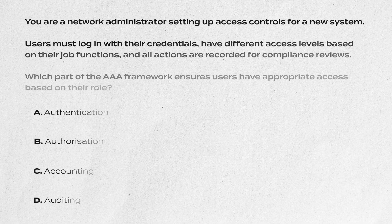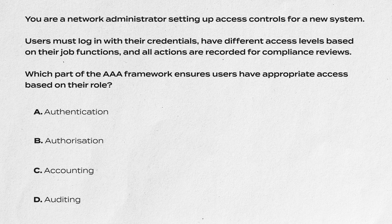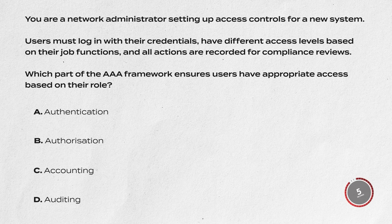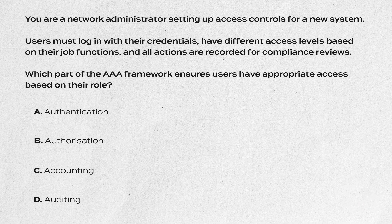Before we end, let's test your knowledge with a couple of quiz questions. Question one: You are a network administrator setting up access controls for a new system. Users must log in with their credentials, have different access levels based on their job functions, and all actions are recorded for compliance review. Which part of the AAA framework ensures that users have the appropriate access based on their role? Is it A, authentication; B, authorization; C, accounting; or D, auditing? The answer is B, authorization. Authorization provides the appropriate permissions and access based on the identity.